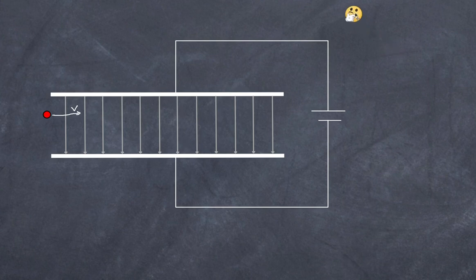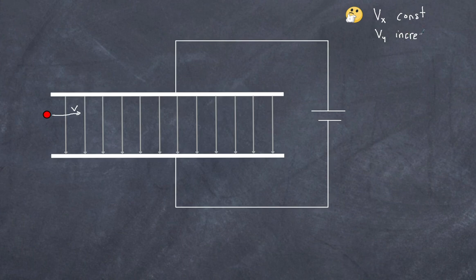What sort of motion will the particle exhibit? The velocity in the horizontal direction is constant. However, in the vertical direction, the velocity is changing — it increases at a constant rate.